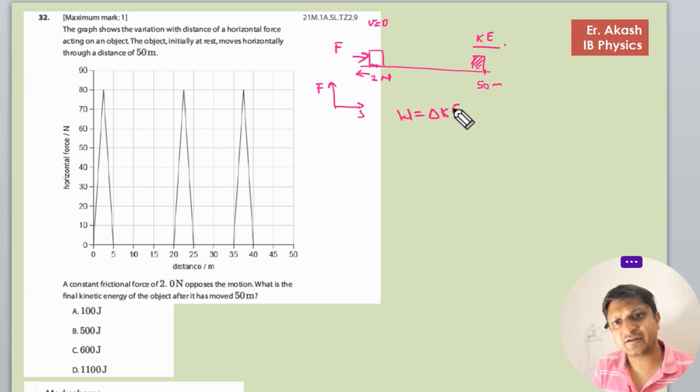Okay, so the final KE minus KE initial will be equals to KE final only, because initial KE is zero.